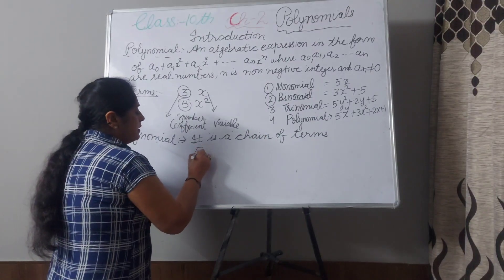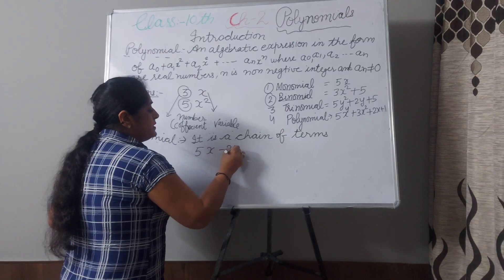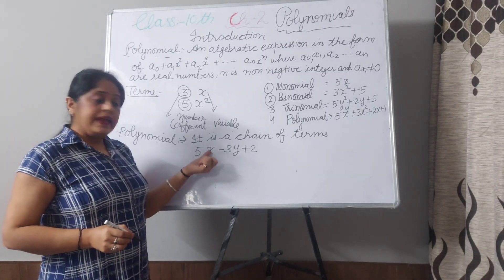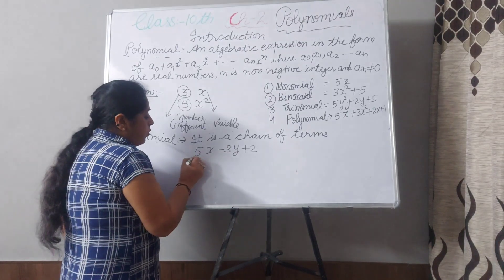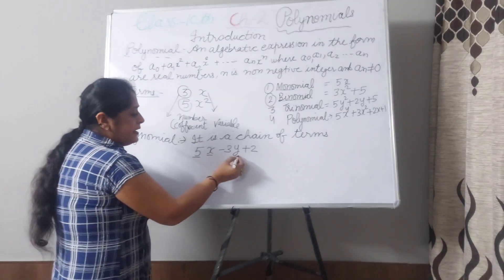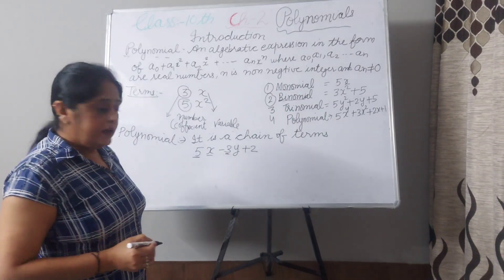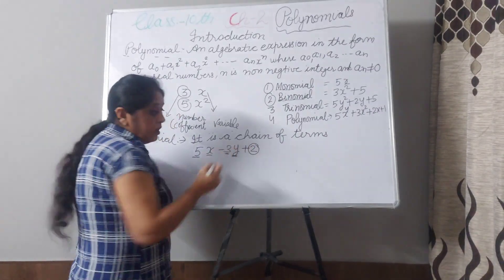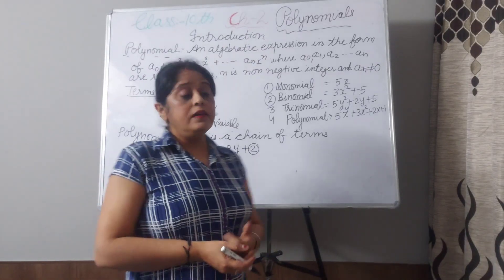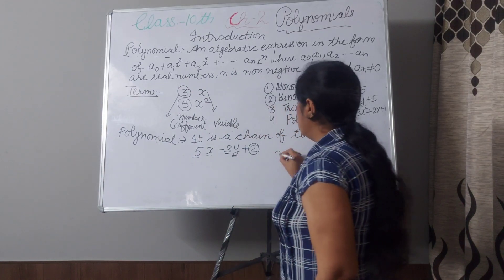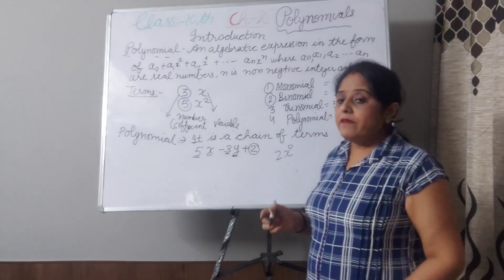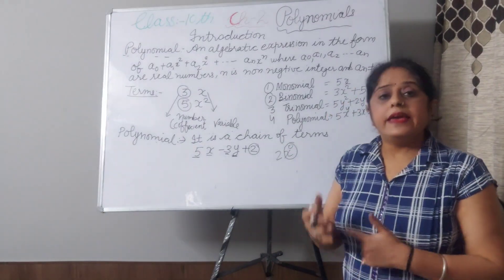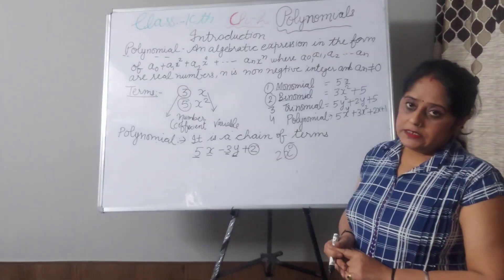One more example: 5x minus 3y plus 2. Here 5x means x power 1 — 5 is the coefficient and x is the variable. In minus 3y, the 3 is the constant coefficient and y is the variable. And 2 is a constant — you can write it as 2·x⁰ or 2·y⁰, because you know that x⁰ equals 1.